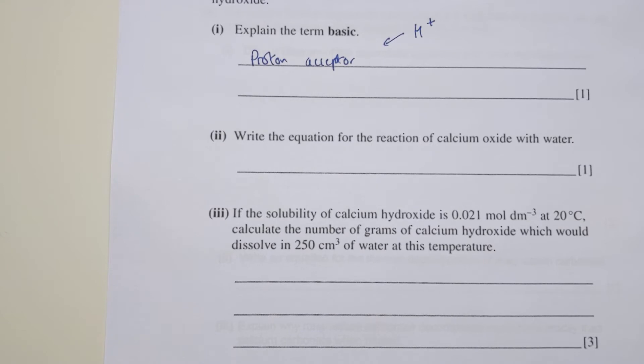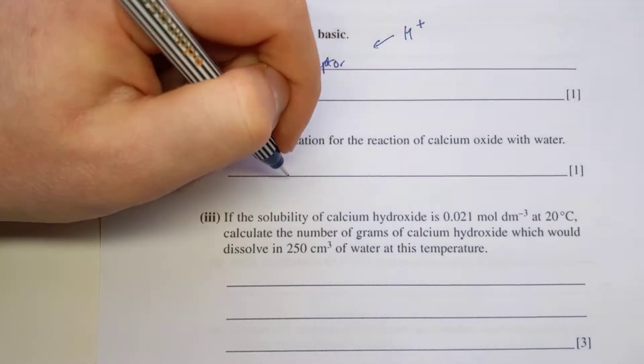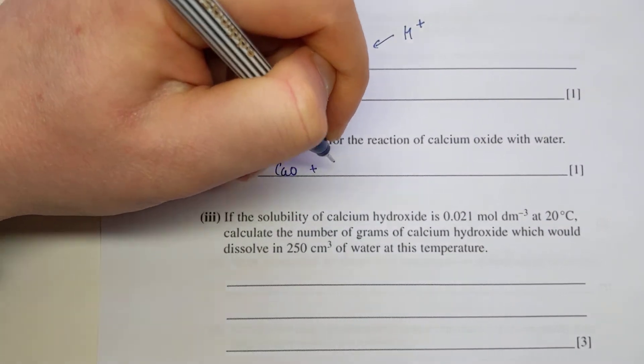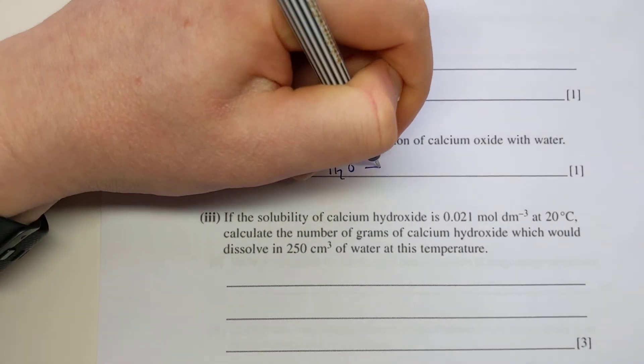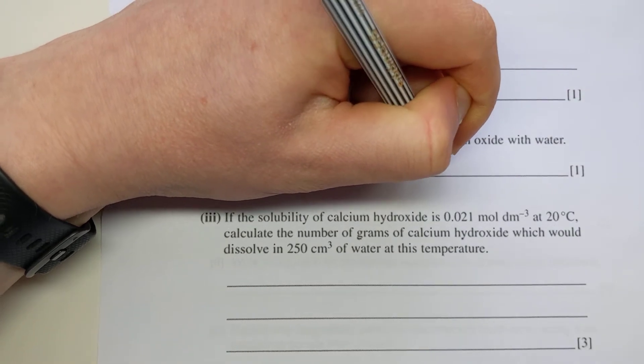Part two: write the equation for the reaction of calcium oxide with water. Again, that's pretty much straight out of your notes. So calcium oxide will react with H2O to make the hydroxide Ca(OH)2.